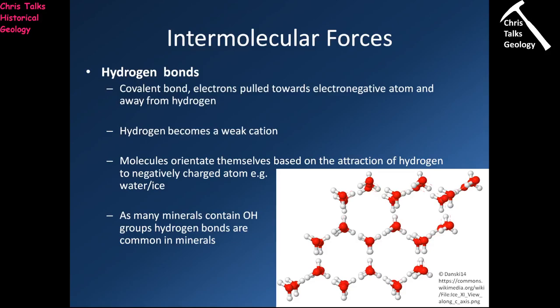Hello everybody, this is Dr. Christopher White and welcome back for part two of the minerals presentation. Before our break we were discussing the three types of bonds found in minerals — ionic, covalent and metallic — and in all three instances they required the exchange of an electron, which essentially produced a strong bond between the atoms.